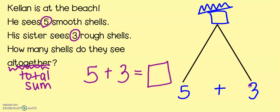Looks like we're going to need to add to find our sum. Five, six, seven, eight. Sorry about that, number three. So, they found eight shells all together. Shells has that S-H sound at the beginning. Eight shells.